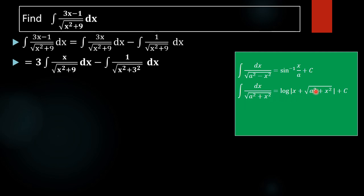We can rewrite the second integral using the formula: log of x plus square root of x squared plus 3 squared plus c. So this part is resolved.